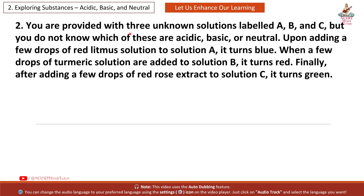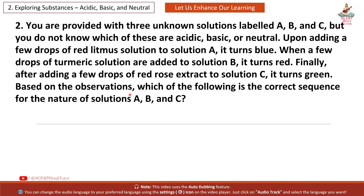Question 2: You are provided with 3 unknown solutions labelled A, B and C, but you do not know which of these are acidic, basic or neutral. Upon adding a few drops of red litmus solution to solution A, it turns blue. When a few drops of turmeric solution are added to solution B, it turns red. Finally, after adding a few drops of red rose extract to solution C, it turns green. Based on the observations, which is the correct sequence for the nature of solutions A, B and C? Answer: Basic, Basic and Basic.